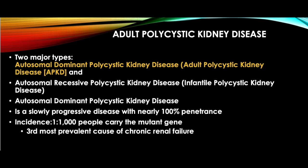Autosomal dominant polycystic kidney disease is a slowly progressive disease with nearly 100% penetrance. Its incidence is 1 in 1000 people. It is the third most prevalent cause of chronic renal failure. Mean age at diagnosis is 43 years. However, neonatal and infantile onset has also been reported. The incidence is equal in males and females. Onset of cyst formation is most likely in the first decade.